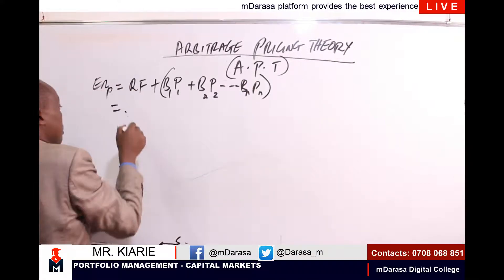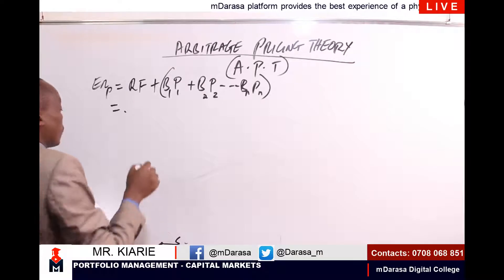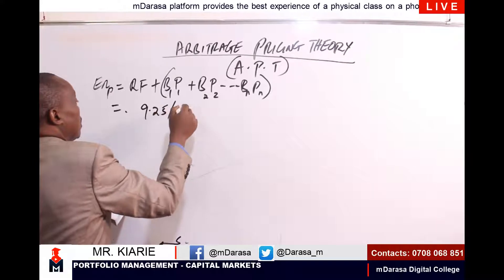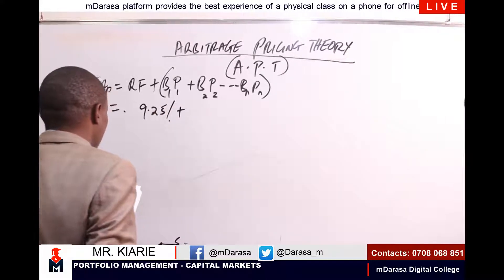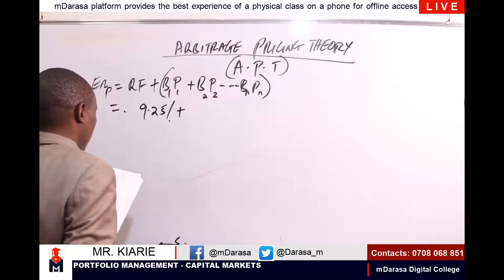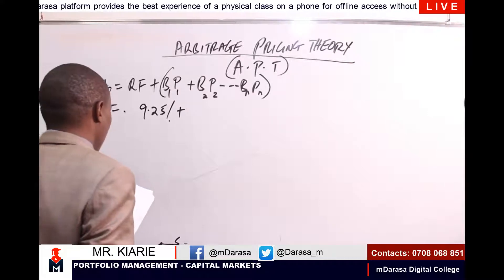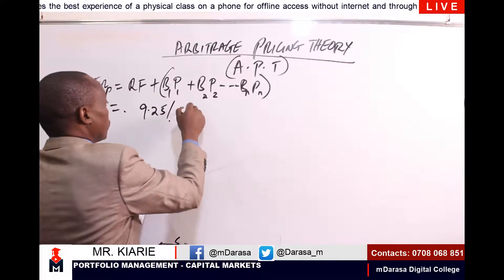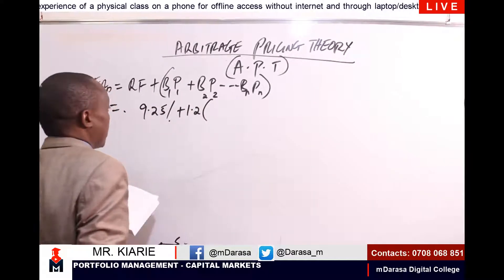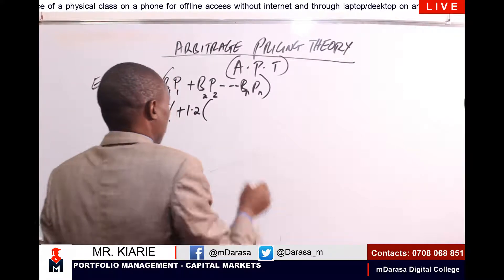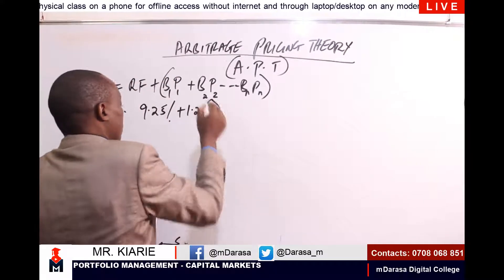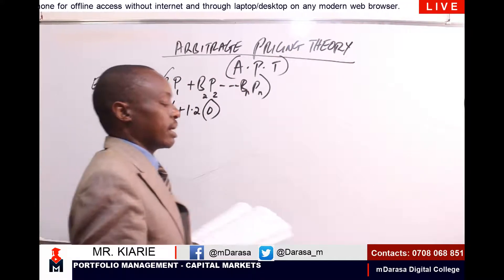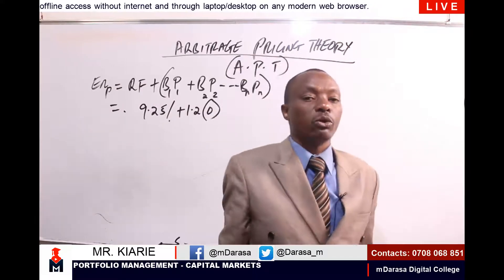In this case, we know that our risk-free rate is 9.25%. The first factor is the GNP — the Gross National Product — whose beta is 1.2, multiplied by a risk premium of 0, since there is no risk premium for GNP because the expected and the actual values are the same.